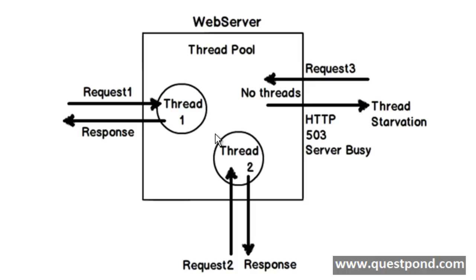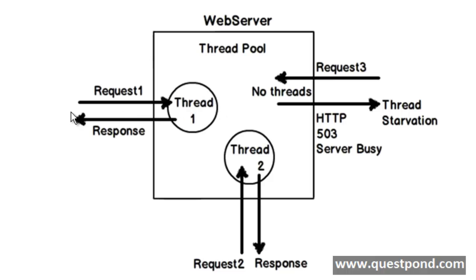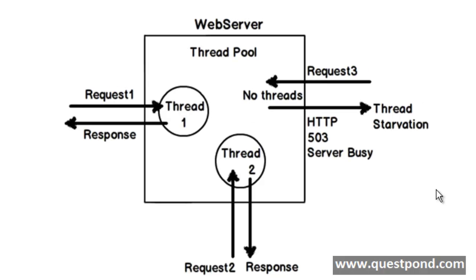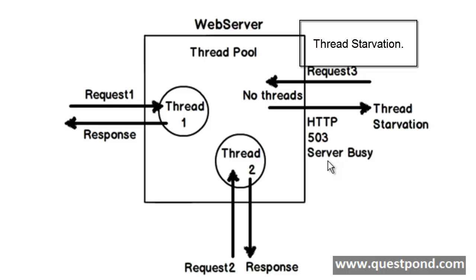I understand that a thread pool size of 2 is not real, but just to make things simple, let's assume the pool size is 2. Request 1 comes in and picks up thread 1 from the thread pool and starts serving that request. Request 2 comes in and picks up the second thread and starts serving. Now request 3 comes in and we have no more threads in our thread pool, so request 3 goes into a waiting mode. If this waiting mode prolongs for a long time, the server will send a 503 server busy message to the client. This situation — where requests cannot be served because the maximum thread pool size has been utilized — is called thread starvation.